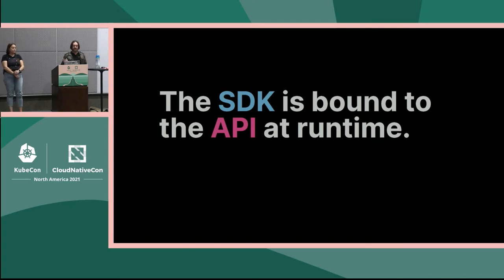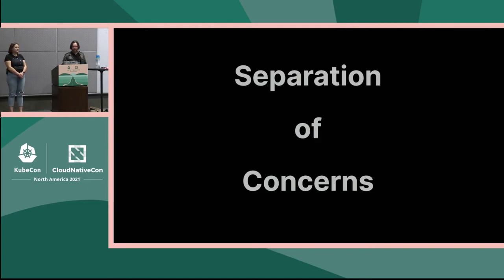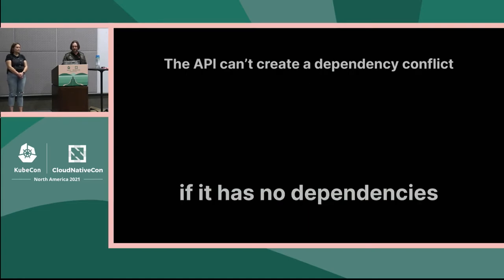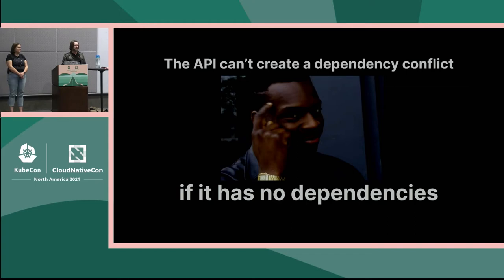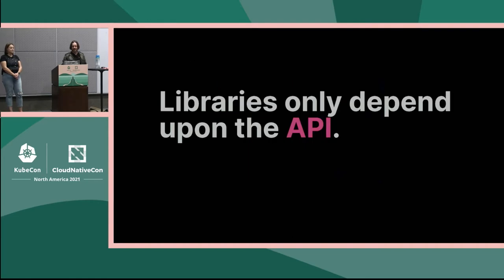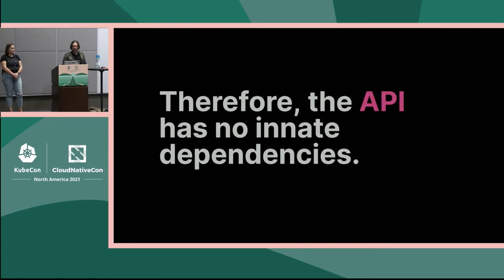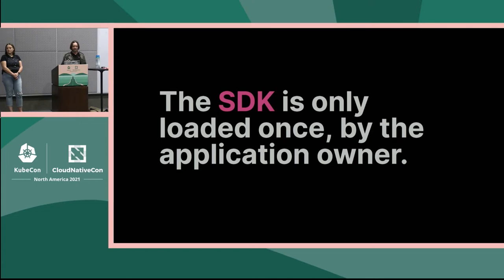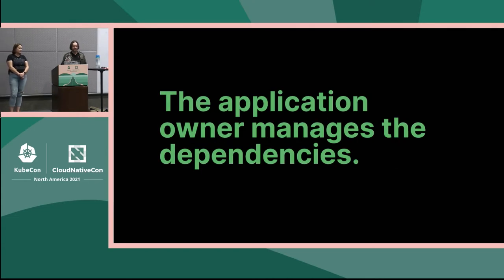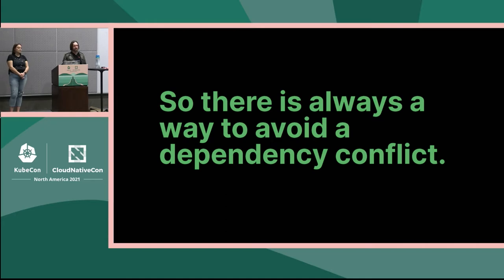You take the SDK and bind it to the API at runtime, so you aren't even forced to choose the SDK we provide — you could build your own. This helps because separating these concerns means the API no longer has any dependencies; it's just a thin layer of interfaces, so it can't create a dependency conflict. The SDK is only loaded once, by the application owner, so the application owner is now managing the dependencies, and you're not going to see version conflict within the SDK.